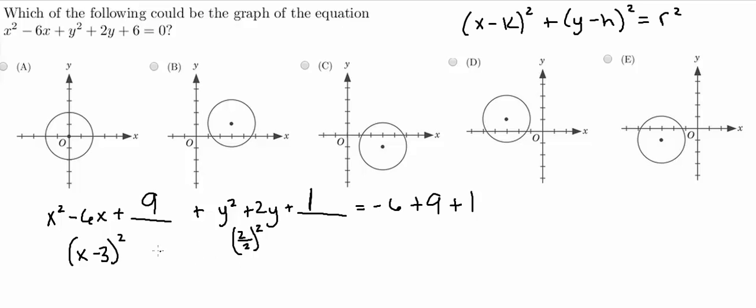You can go ahead and multiply that out but that is going to be what it comes out to be. So now over here, we're going to have this plus whatever this is and this is actually just going to be y plus 1 squared.